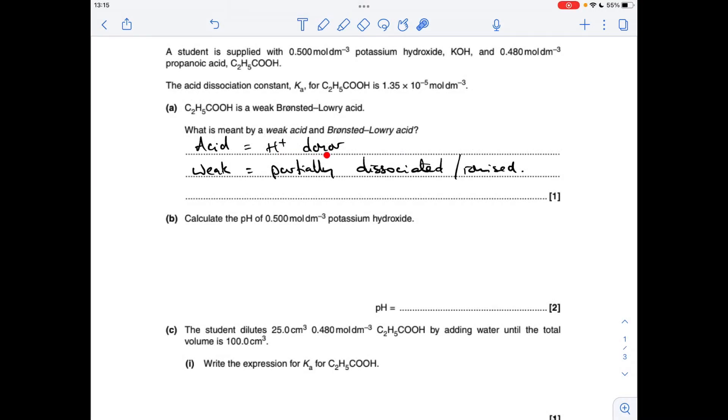A Bronsted-Lowry acid is a proton donor; H+ donor is fine. The weak acid is partially dissociated or partially ionized.